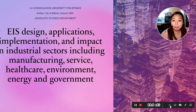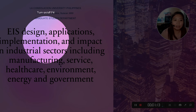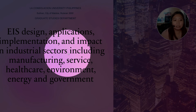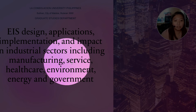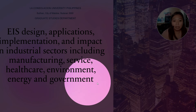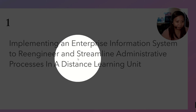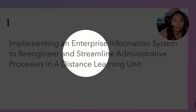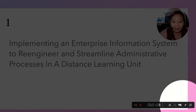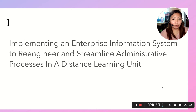One great feature is the spotlight. When you are in a lesson, you can use it to point to specific text on your slide — for example highlighting 'EIS Design Applications Implementation and Impact in Industrial Sectors, including Manufacturing, Service, Healthcare, Environment, Energy, and Government.' When you move to the next slide, you can click the spotlight again or simply press F4 to toggle it off.